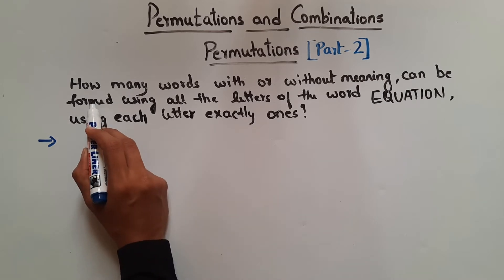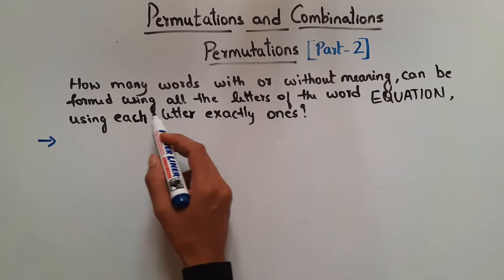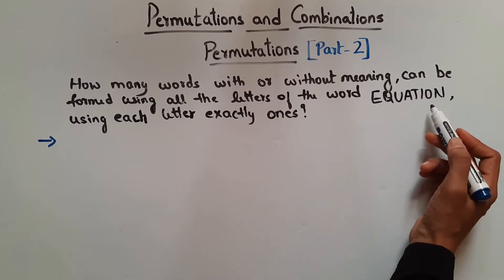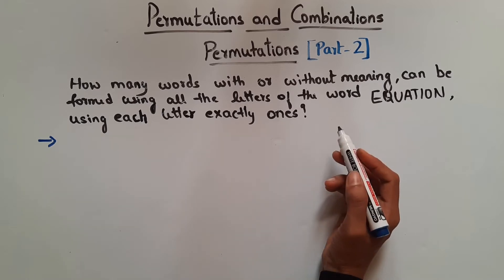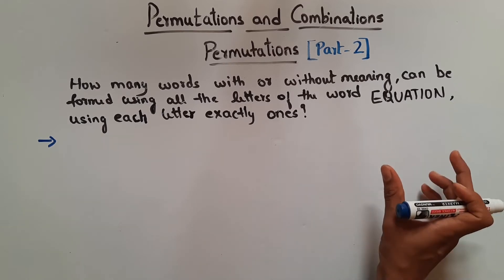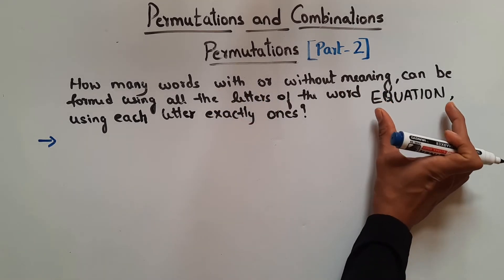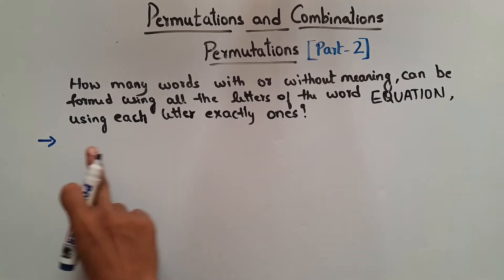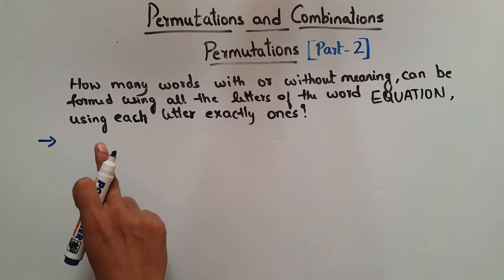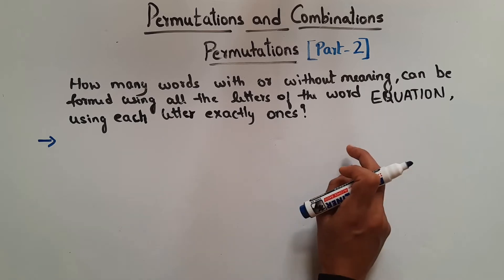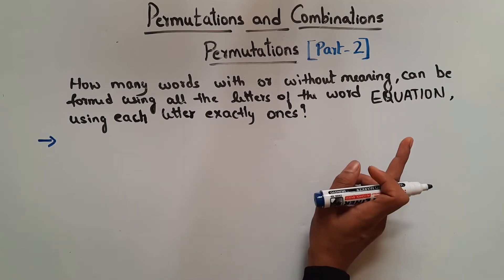So now let's see this problem. Here it says how many words with or without meaning can be formed using all the letters of the word EQUATION, using each letter exactly once. So what they are asking? They are asking how many words you can make with or without meaning out of the letters of the word EQUATION, where each letter should not be repeated. That means there is no repetition.